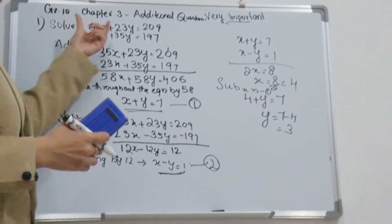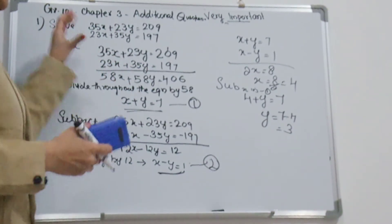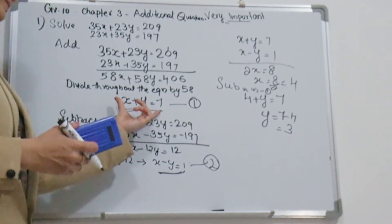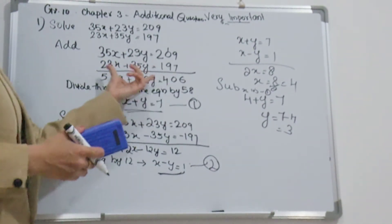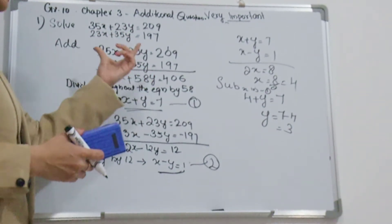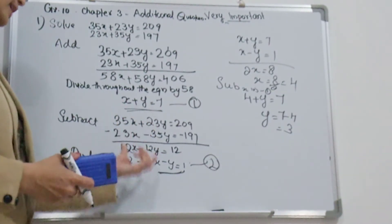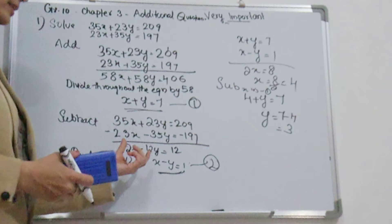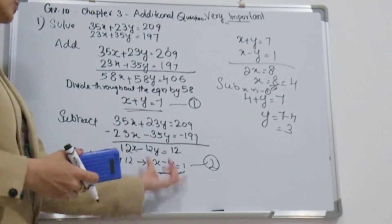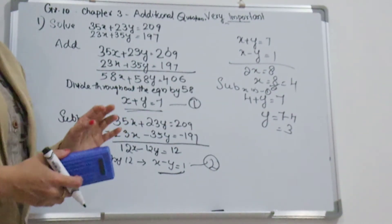When you use the normal elimination method, it takes a lot of time. So what you do is: first add the equations and simplify to get one equation. Then subtract and simplify to get another equation. Divide by 12, and finally solve the two simplified equations using the elimination method to get x and y.